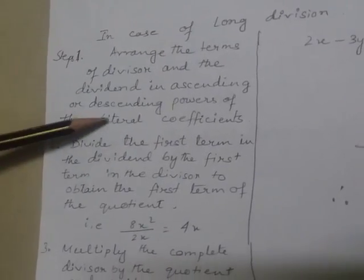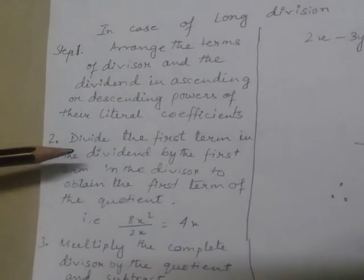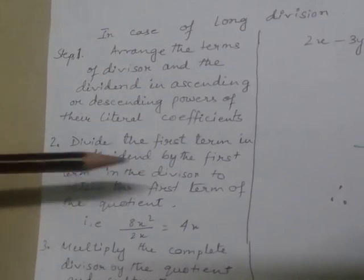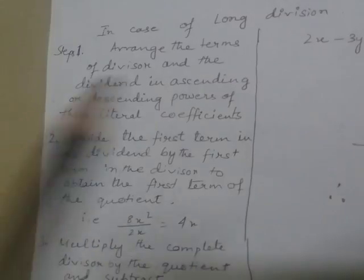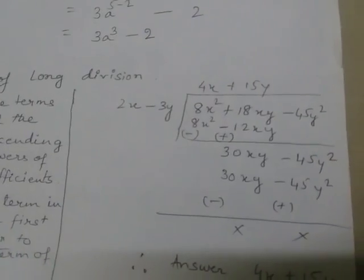Divide the first term in the dividend by the first term in the divisor to obtain the first term of the quotient. Let us see: 8x² divided by 2x gives 4x.